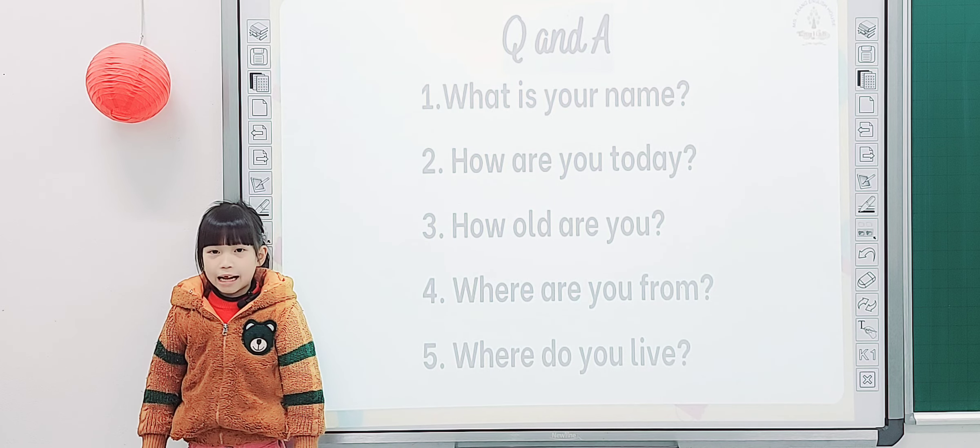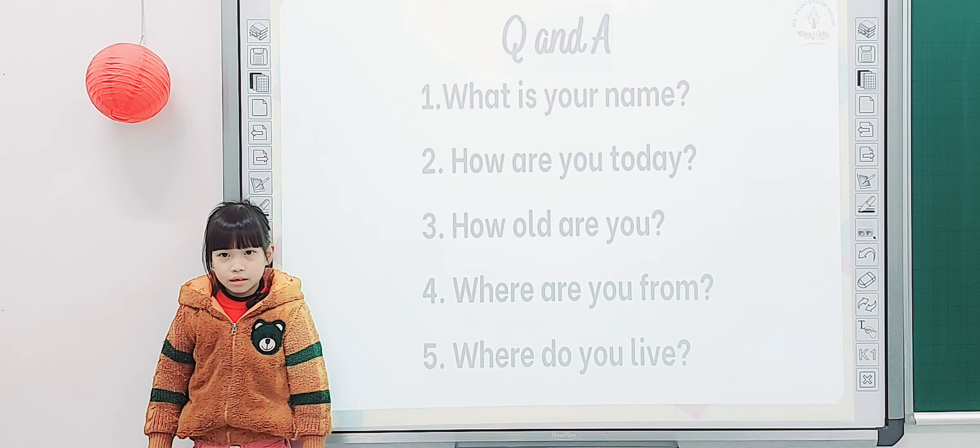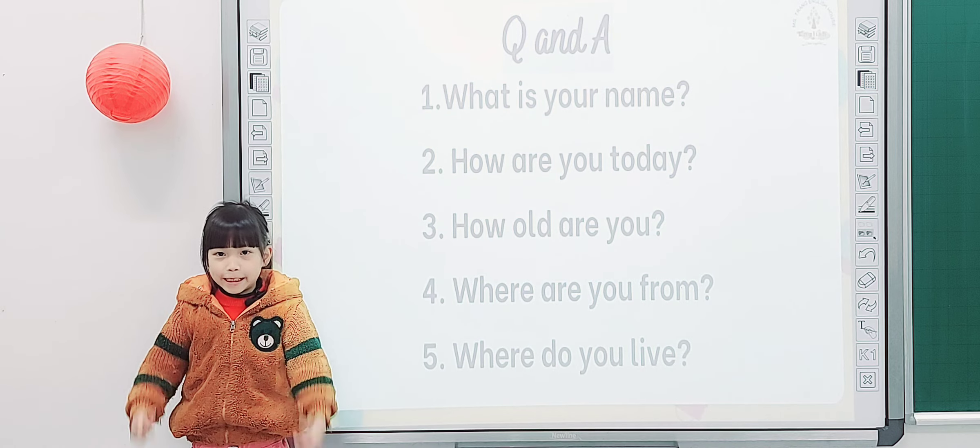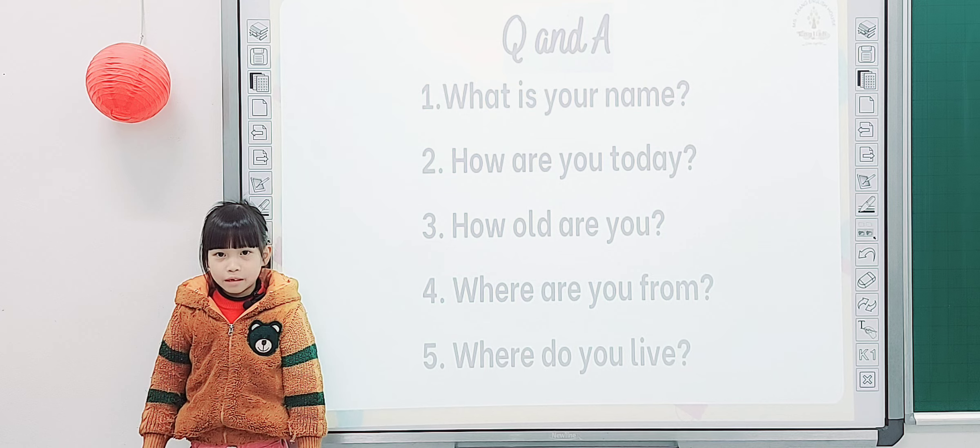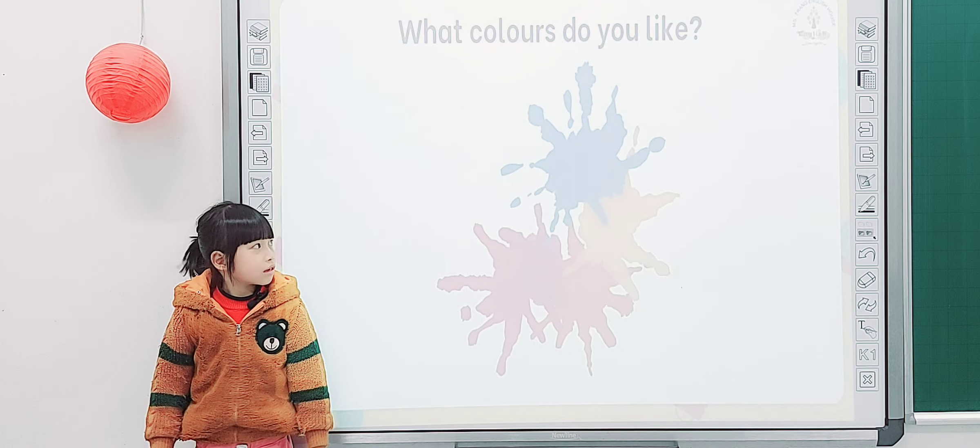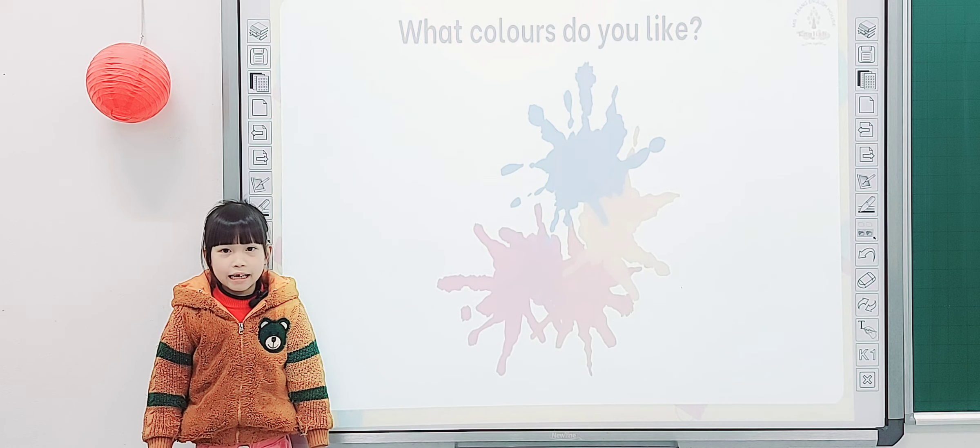Tell me what's your name? My name is Ngọc Linh. Linh, how are you today? I'm happy. How old are you? I'm six years old. Where are you from? I'm from Vietnam. And where do you live? I live in Hương Yên. Tell me what colors do you like? I like pink.